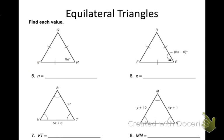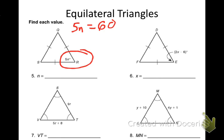Number 5: triangle QRS is given with angle R equal to 5N. Since it's equilateral, I set 5N = 60. Dividing both sides by 5 gives N = 12.